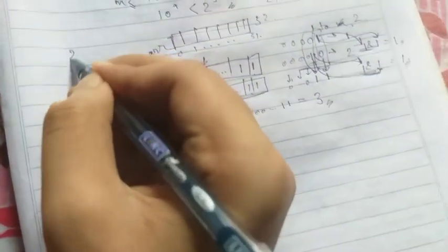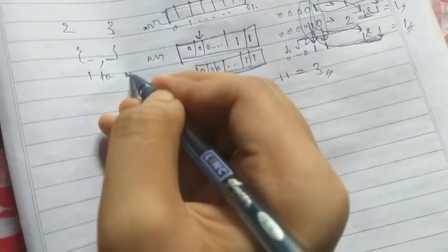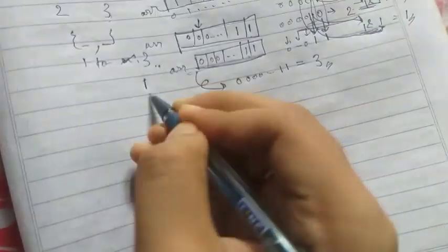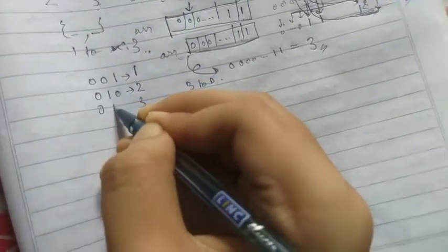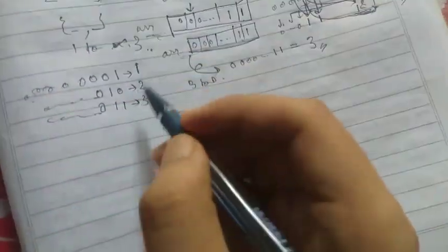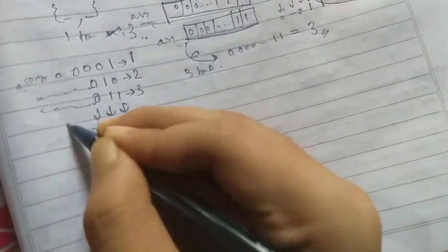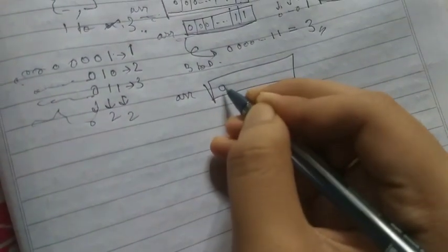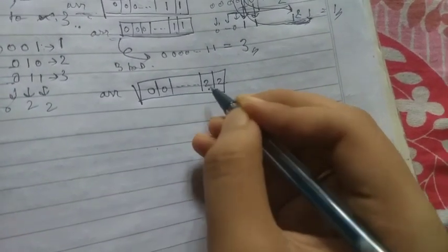Now let's jump to the next test case: n=2, m=3. The array is of size 2 and the numbers are from 1 to 3. Binary representations: 1 is 001, 2 is 010, 3 is 011. We check how many 1s are in the units digit — there are two 1s (from 1 and 3). For the tens digit there are also two 1s (from 2 and 3). So the ARR looks like: 0, 0, 0, ... 2, 2.